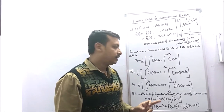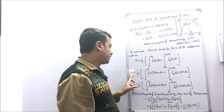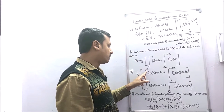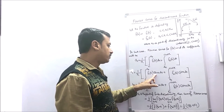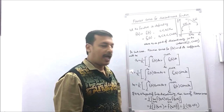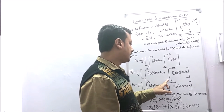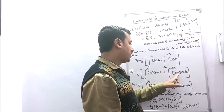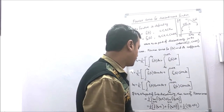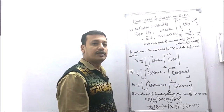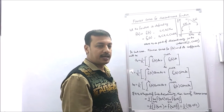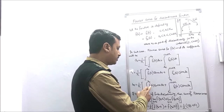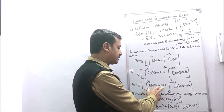Similarly, the Fourier coefficient an = (1/π) [∫ from c to x0 of f1(x) cos(nx) dx + ∫ from x0 to c+2π of f2(x) cos(nx) dx]. The third coefficient bn = (1/π) [∫ from c to x0 of f1(x) sin(nx) dx + ∫ from x0 to c+2π of f2(x) sin(nx) dx].